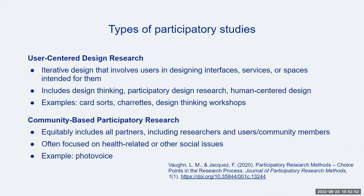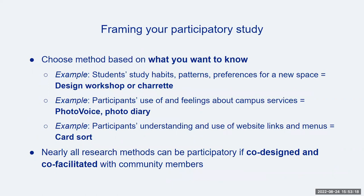For this module, I'll focus on open and closed card sorts. A second type, community-based participatory research, often focuses on health or other social issues. This approach involves all partners, including researchers and community members, in every phase of the research process, from study design to dissemination. The example I'll focus on in this module is photovoice. As with any research study, you'll want to first consider your research questions and goals and then choose the method best suited to help achieve those goals. Because participatory research is meant to include users or community members from the very start, this would be a good time to involve users — what approaches resonate most with their needs or interests? Here are just a few types paired with relevant research topics.